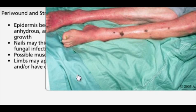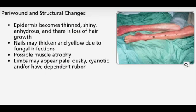Color changes may be evident with the affected limb appearing pale, dusky, or cyanotic in color, especially with elevation. The limb may have dependent rubor. Edema is unusual with arterial insufficiency, but if present, may represent concomitant venous insufficiency or congestive heart failure.